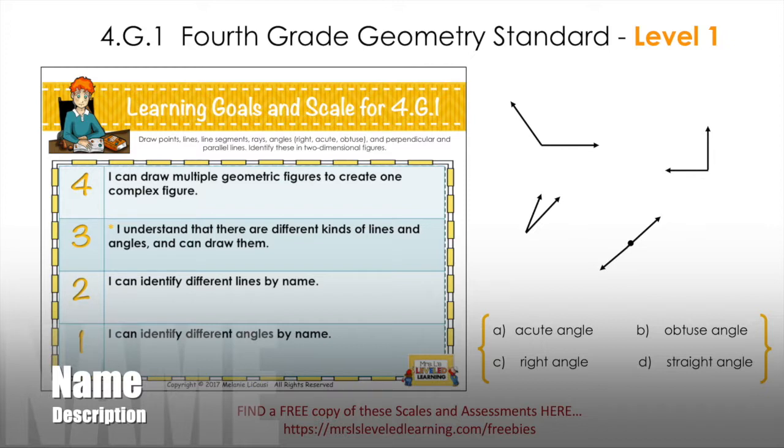In this fourth grade geometry standard, students will be asked to draw points, lines, line segments, rays, angles, and many aspects that define shapes and angles. At this grade level, angles are very new for students. They may have discussed angles a little bit when defining the difference between squares and triangles, maybe the special corners that squares have compared to other shapes like triangles or diamonds.